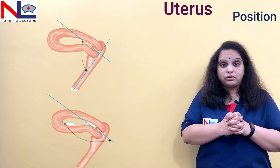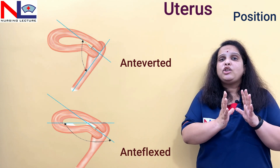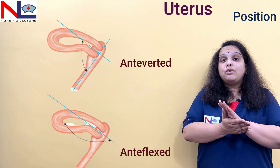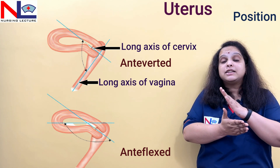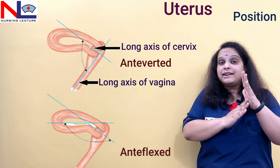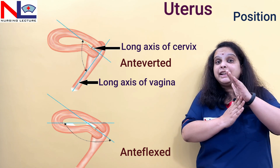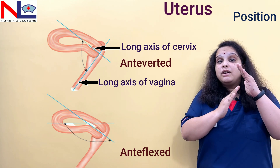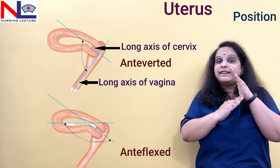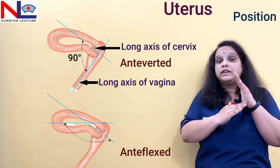The normal position of the uterus is anteverted and antiflexed. What do we mean by anteverted? There is an angulation at the level of the cervix — specifically the relationship of the long axis of the vagina with the long axis of the cervix. At this angle, the uterus bends forward, leaning toward the bladder. The angulation between the long axis of the vagina and the long axis of the cervix creates a 90-degree angle, thereby showing the anteverted position.